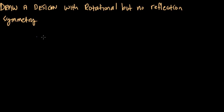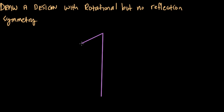So here we're attempting to draw a design with rotational but no reflectional symmetry. And this might seem overwhelming at first, but my approach is just — let's say we draw a line, and off of one side, we draw this triangle like a flag. If we rotated this triangle around this point right here,